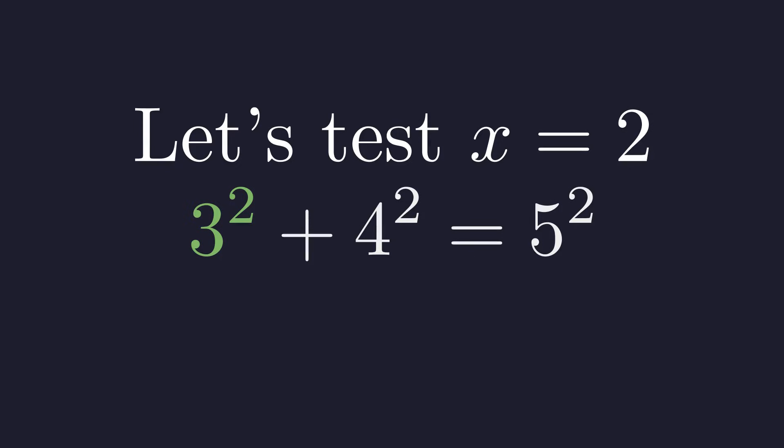First, let's evaluate 3 squared. 3 squared is 9. Next, we evaluate 4 squared. 4 squared is 16. Now, we sum the terms on the left side. 9 plus 16 is 25. Finally, we evaluate the right side. 5 squared is also 25. The equation holds true.